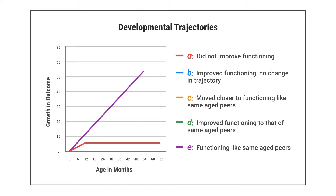The purple line illustrates typical development and is category E — children who continue to function like same-age peers between entry and exit. The green line shows category D — children who were not functioning like same-age peers when they entered the program but caught up. Both the blue and orange lines illustrate children who were not functioning like same-age peers at entry. The orange line shows children who begin acquiring skills at a faster rate after entering the program, while the blue line represents children who continue acquiring new skills at the same rate.